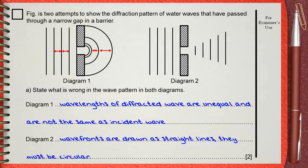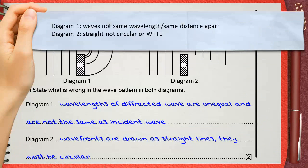Looking at the mark scheme, diagram 1, you can say waves are not the same wavelength, are not the same distance apart. In diagram 2, the error is that lines are straight, not circular, or other words to that effect.